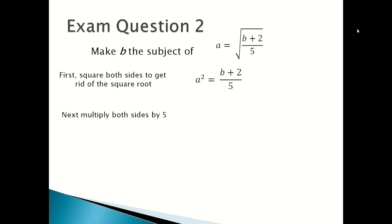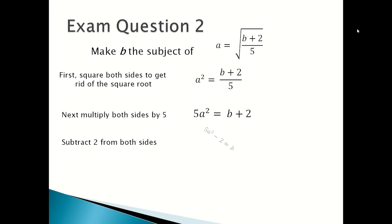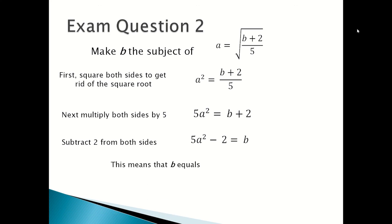Next you multiply both sides by 5 to get 5a squared equals b plus 2. Then you subtract 2 from both sides to get 5a squared minus 2 equals b, which means that b equals 5a squared minus 2.